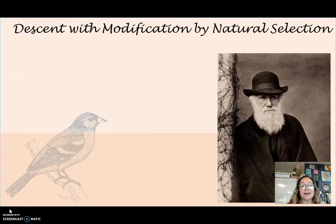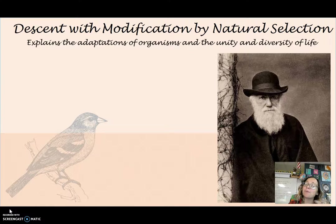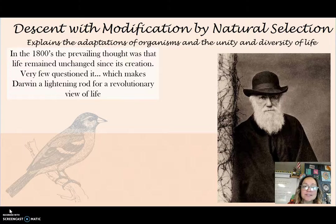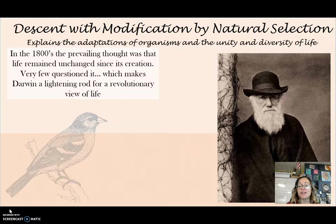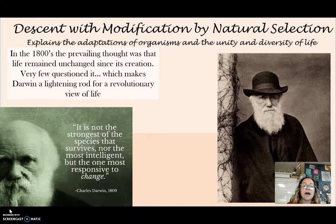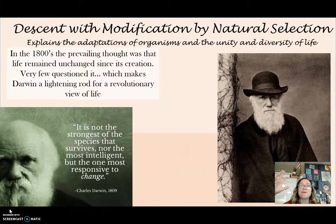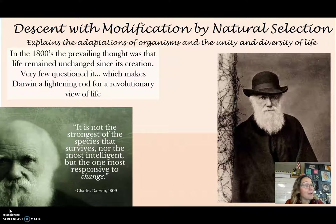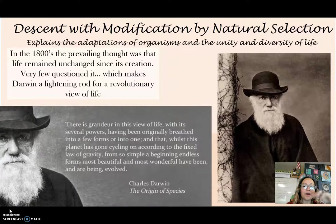Darwin proposed descent with modification by natural selection. This explains the adaptations of organisms and the unity and diversity of life. In the 1800s, the prevailing thought was that life remained unchanged since creation, and very few questioned it, which makes Darwin a lightning rod for a revolutionary view of life — his book was like a bestseller. The whole idea about natural selection is that when environments change, some individuals will be able to survive and reproduce better than others.